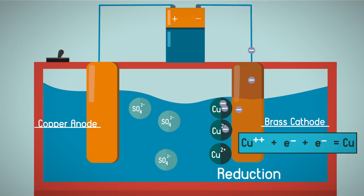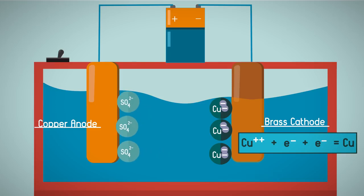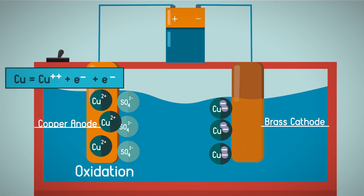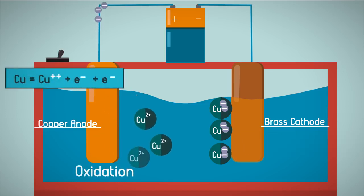The sulfate ions are negatively charged and so are attracted to the positively charged copper anode. The current supplied to the anode causes the copper atoms to oxidize, which is lose electrons, and then dissolve into the electrolyte solution.